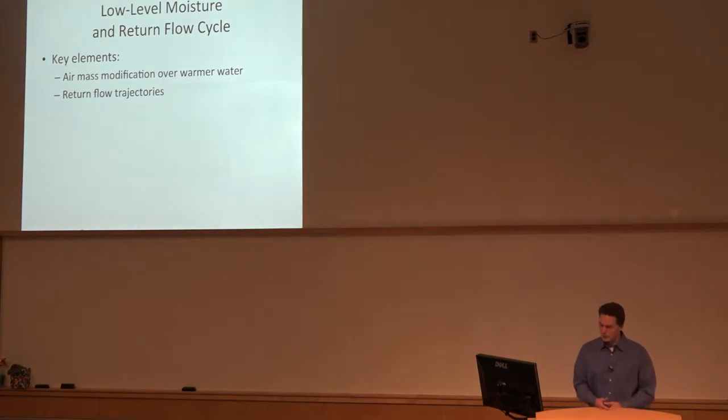Key elements in this process, really there's two things that you need to know. It would be how the air mass modifies over the warmer underlying ocean surface and then where's the air coming from and going to, so the air mass trajectories. Those are the two key elements and if you can keep track of those, you can make some pretty powerful statements about what the moisture return cycle will look like as the air mass returns inland ahead of the next synoptic system.